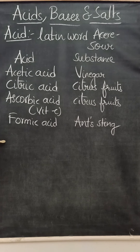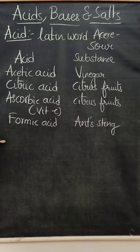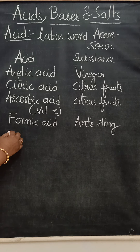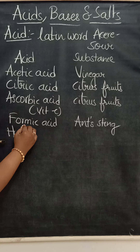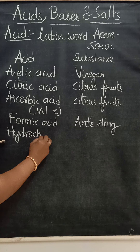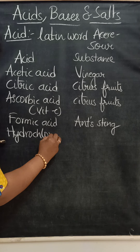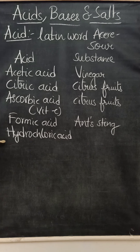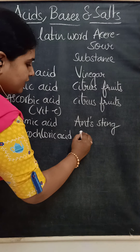In our stomach, an acid is present which helps in the digestion of food material. What is that acid? In biology you have read already - the acid is hydrochloric acid. Hydrochloric acid is present in the stomach, which is helpful in the digestion of food material.